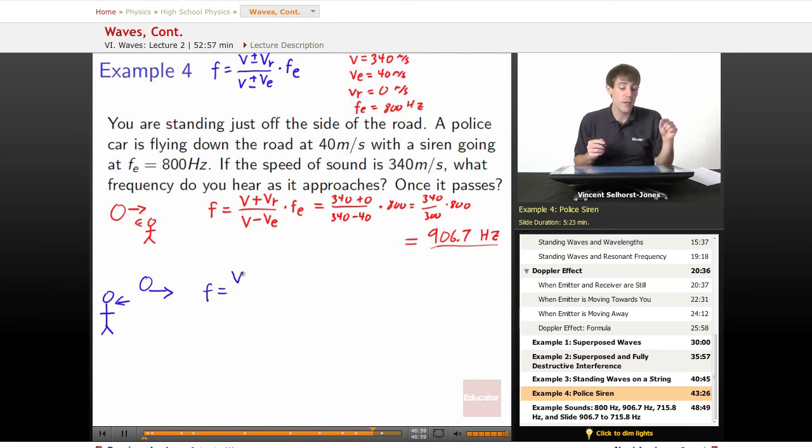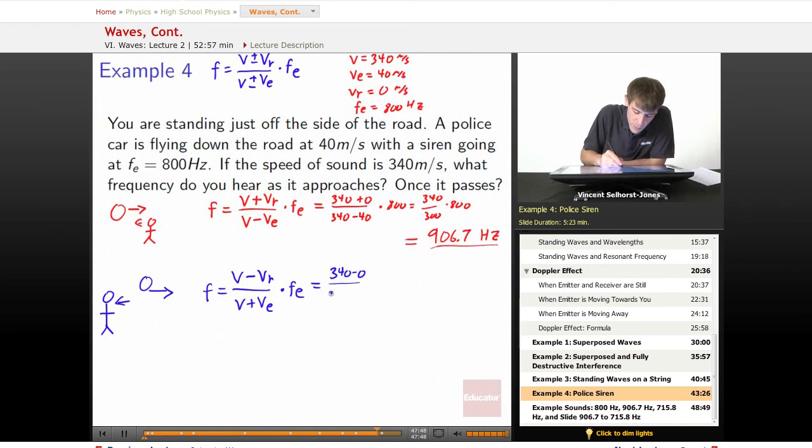So if frequency is equal to v plus or minus vr, what does it become? Well, if you're moving away from an object, you're going to cause yourself to experience less wave peaks because you're going to be running away from the wave peaks. So if you're running away from the wave peaks, we need a smaller number up top. So v minus vr divided by, now the emitter, is it bunching up or is it spreading them out from the point of view of the receiver? Well, it's spreading them out because it goes farther away before dropping the next peak. So that means we're going to have to have a smaller frequency. So it's v plus ve because it's making a larger denominator times the frequency emitted. So we get 340 once again minus 0 divided by 340 plus 40 times 800 equals 340 over 380 times 800, and that gives us the value of 715.8 hertz.